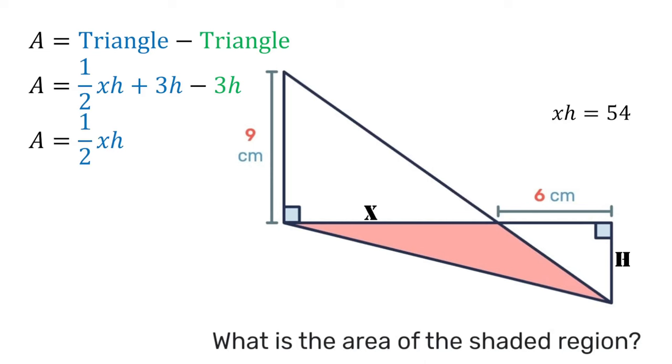But we don't know what the base of the large triangle is. We don't know what the height of the small triangle is. But that is irrelevant, because as we had from before, x times h is 54.